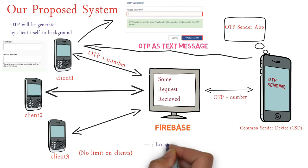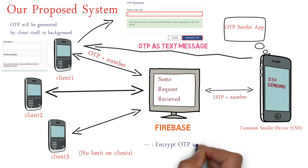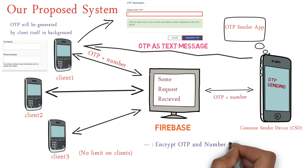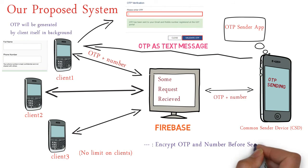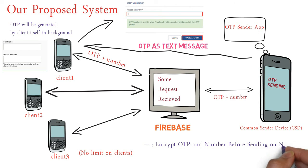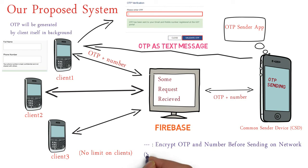So now Client 1 has the text message containing the OTP, and also has the OTP stored on the client device itself. The client will enter the OTP, it will get compared, and if the OTP is correct, then the number will be verified. So this is it.